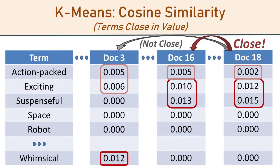K-means is a very simple clustering algorithm — it's linear. You're going to take the vector for one document, take the vector for another document, and compare the terms going down the line. The strength of that value, the cosine similarity, reflects how similar the documents are — specifically the extent to which the terms are being used at the same frequency in both documents.